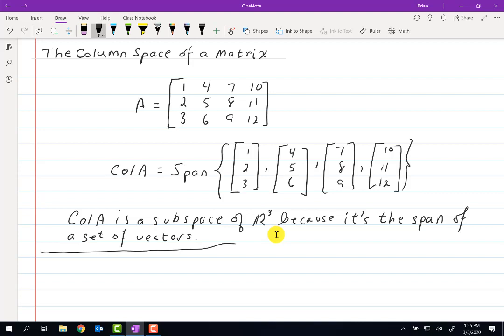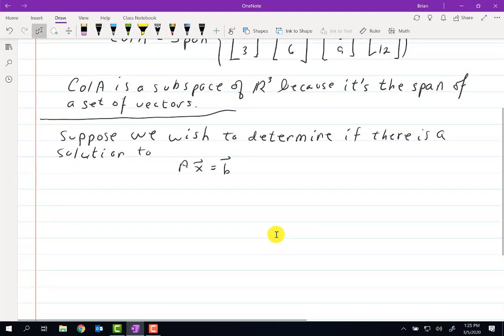So remember that automatically means it's a subspace. So now with this matrix, suppose we wish to determine if there is a solution to Ax equals some vector b. So I'm still using the same A as I was previously. So can we find a vector x for which that's true?